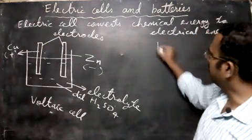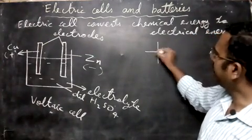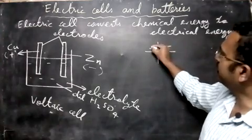What is the symbol of cell? One long line and a short line. Long line is positive, short line is negative. This means cell.